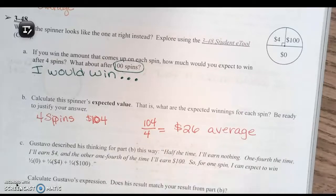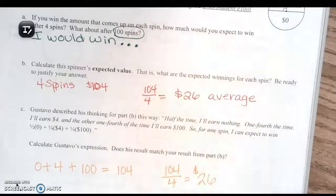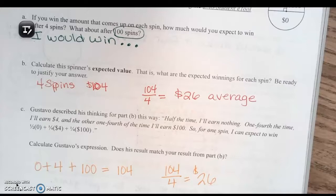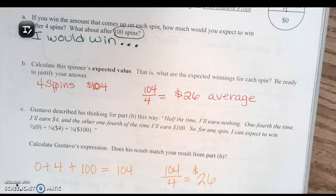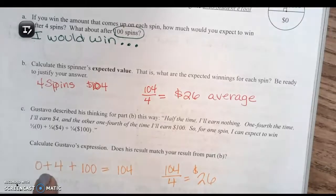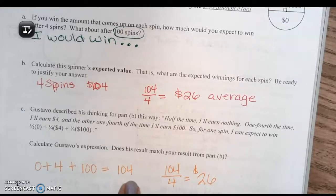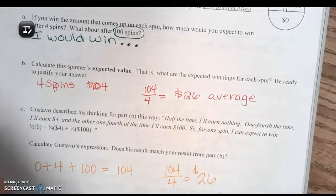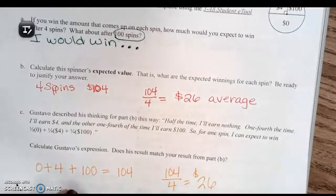For part C, Gustavo described his thinking: half the time I'll earn nothing, one fourth of the time I'll earn four dollars, and one fourth of the time I'll earn 100 dollars. So for one spin I can expect to win: (1/2)(0) + (1/4)(4) + (1/4)(100). That gives you 0 + 1 + 25 = 26, which matches part B.